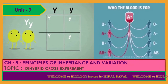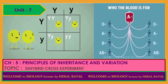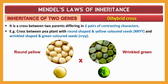Hello students, today we are going to discuss the next topic of this chapter, which is the dihybrid cross experiment. In the previous lecture we already discussed the monohybrid cross experiment, and today we are going to discuss the dihybrid cross experiment. Here, 'di' means two, so if inheritance of two genes is observed during the experiment, it is considered a dihybrid cross experiment.